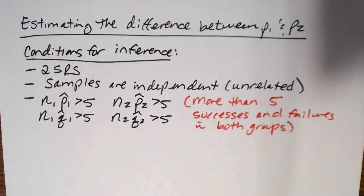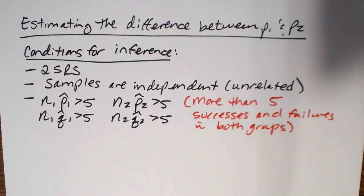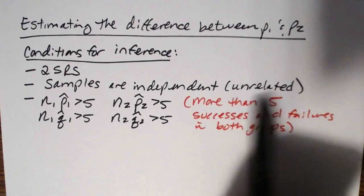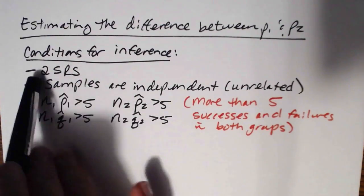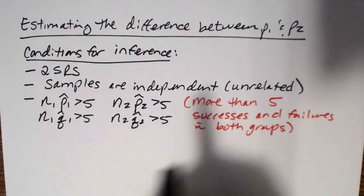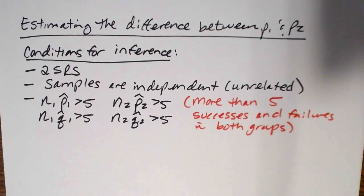That condition ensures we can use the normal approximation to the binomial, which is the distribution the calculator program and the by-hand computation formula are both based on. If this is not met, none of our computations would actually hold true. So to summarize: two simple random samples, they need to be independent, and we have to have more than five successes and failures in both groups. As long as those are met, we're safe to proceed.